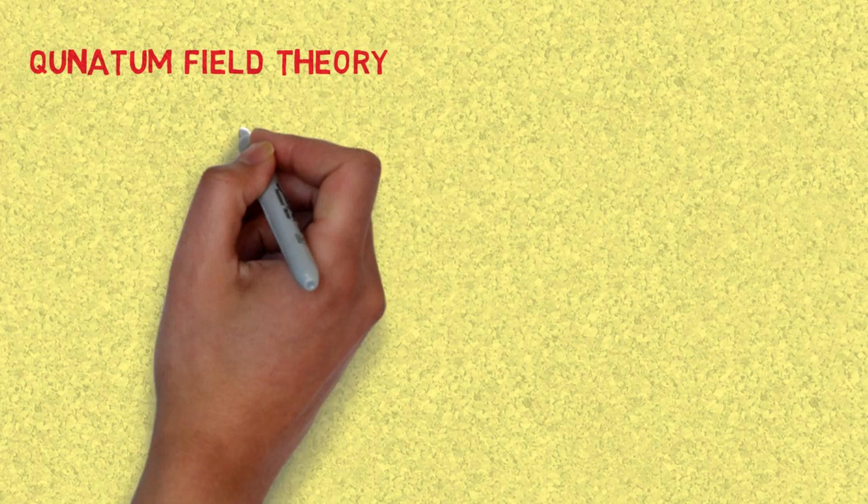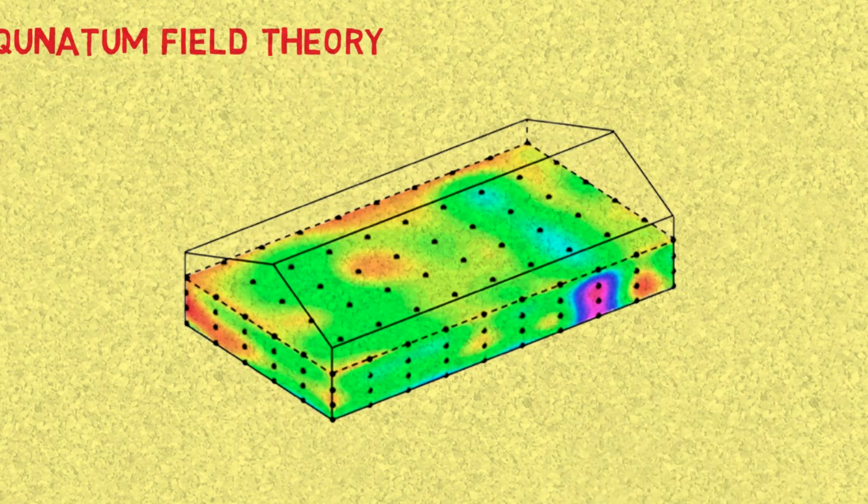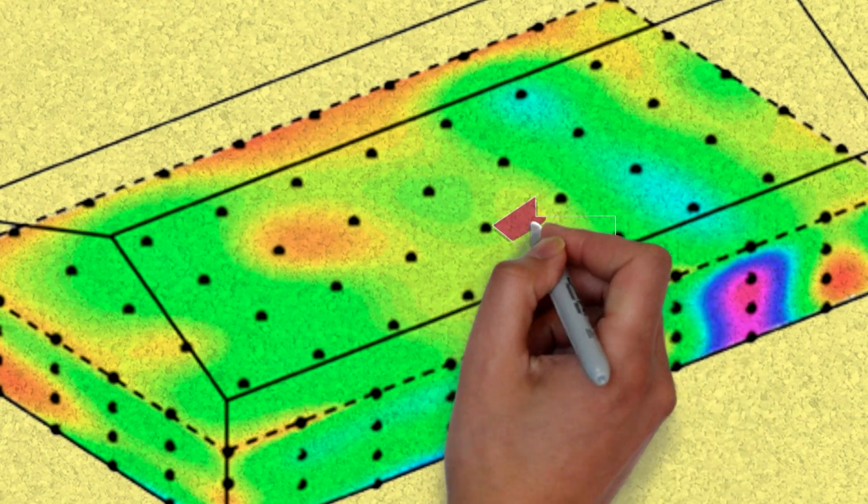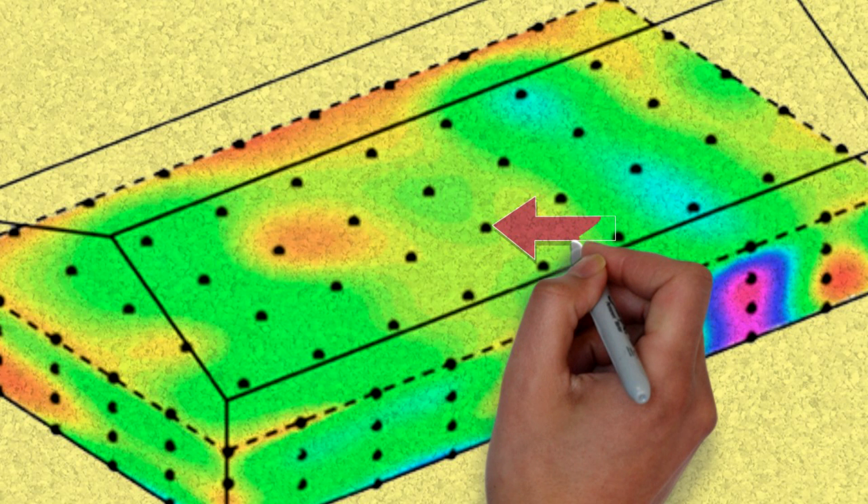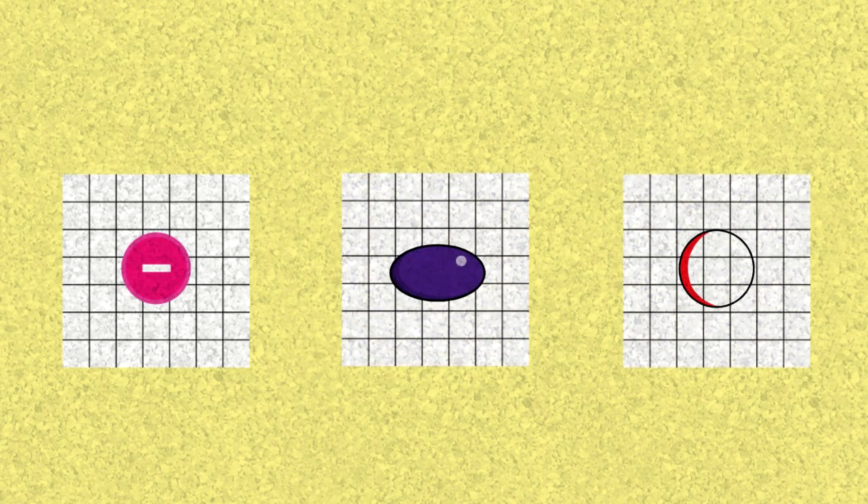In quantum field theory, everything in reality is made out of fields. An easy example of a field is like a temperature field. Each point in space has a certain temperature, so that together is a temperature field. There are also quantum fields: electron field, photon field, Higgs field, etc.